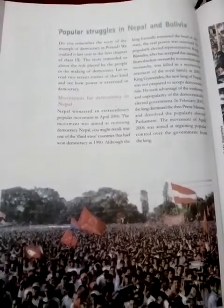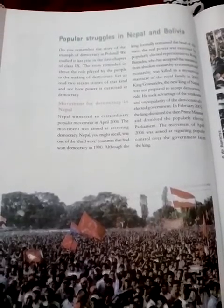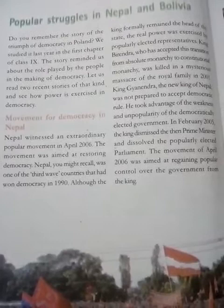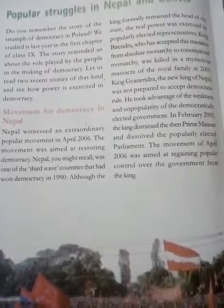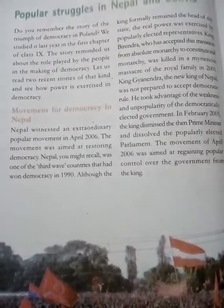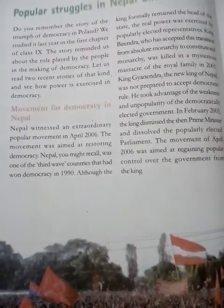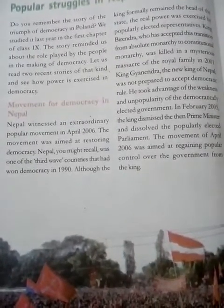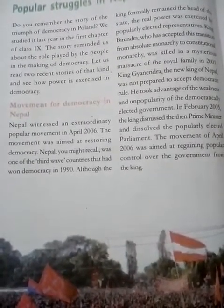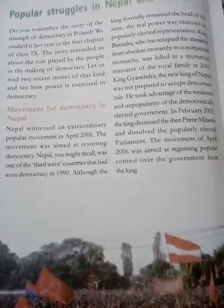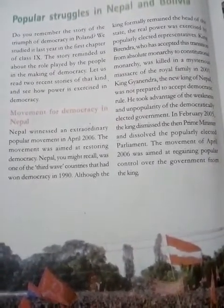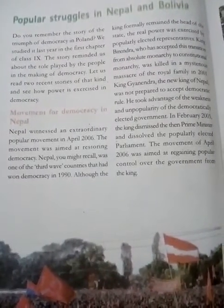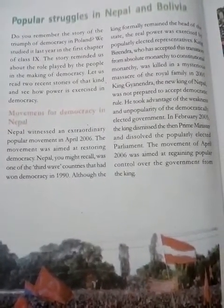The movement for democracy in Nepal started in April 2006. This movement is very famous in Nepal. The democracy system was a constitutional monarchy — the king was running the constitution under a monarchy system, but after the death of their king's children, they didn't want to continue this system.